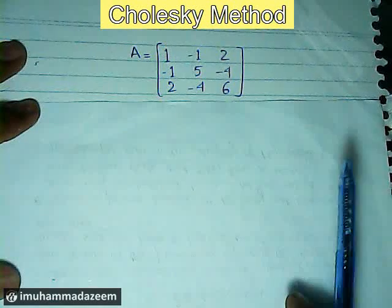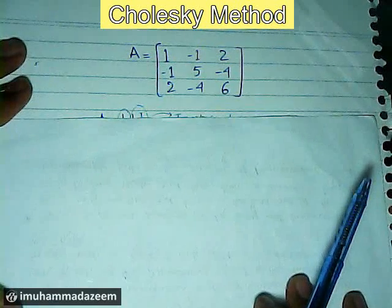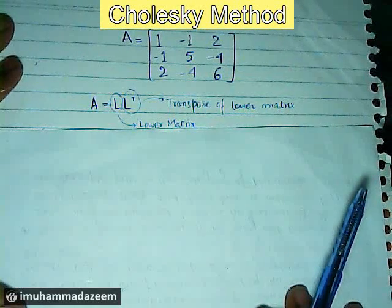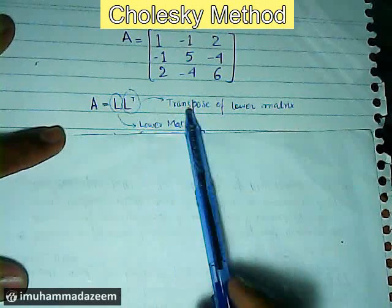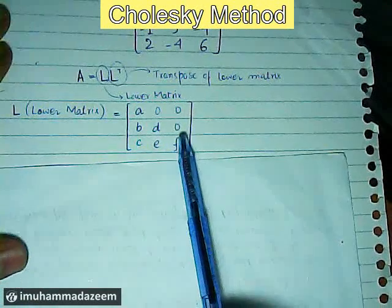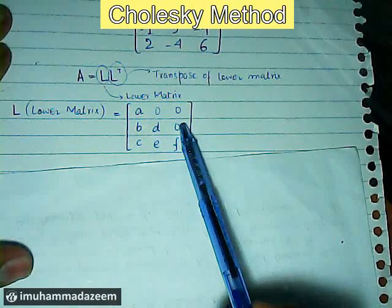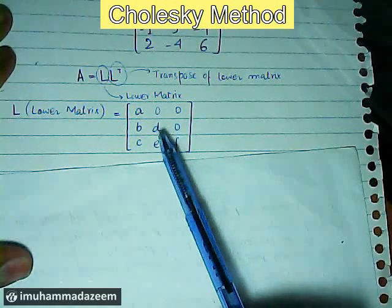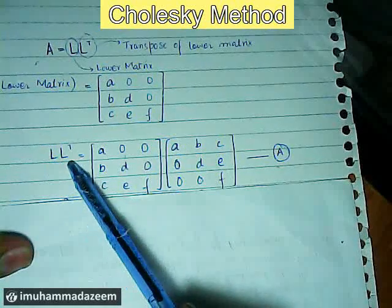The Cholesky method for decomposition and simplification of a matrix states that A equals L times L-transpose, where L is the lower triangular matrix and L-transpose is the transpose of that lower matrix. The simple lower triangular matrix structure has zeros in the upper portion and numbers in the lower portion.